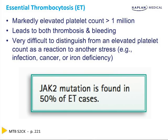Platelets can go up as a reaction to other things — like white count, sedimentation rate, C-reactive protein, ferritin, transcobalamin — but in reactive thrombocytosis it's five, six, or seven hundred thousand, not over a million. That's how you distinguish reactive thrombocytosis from essential thrombocytemia.